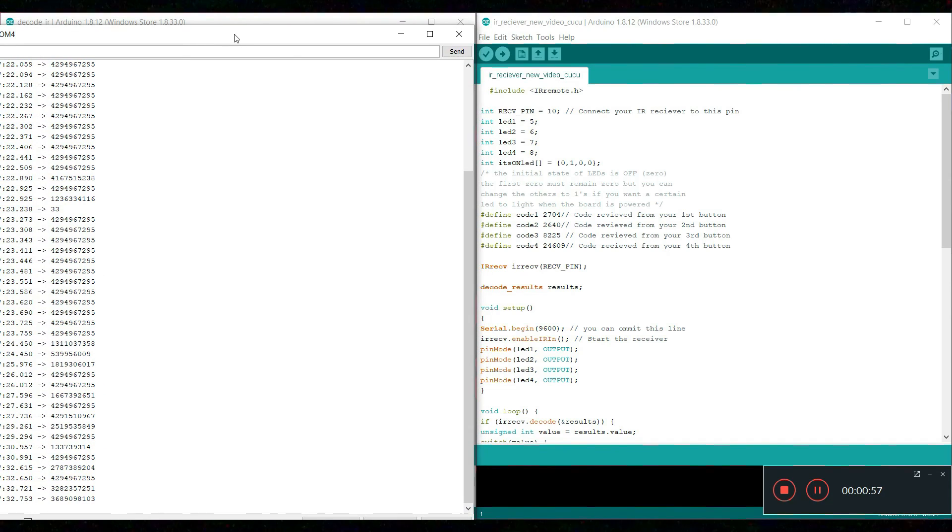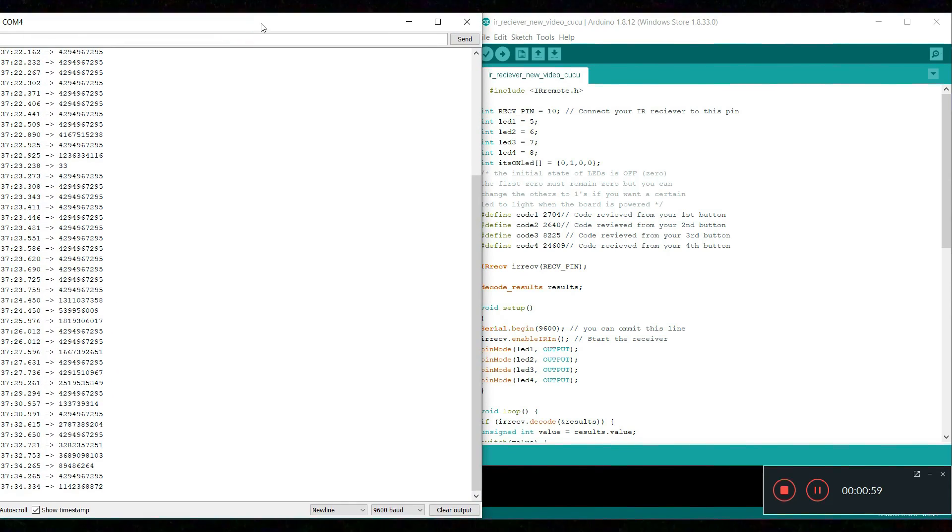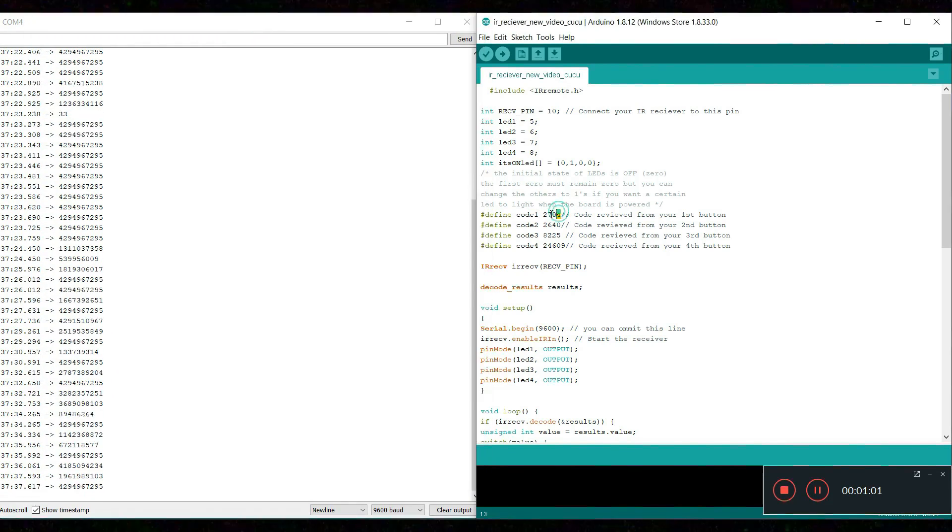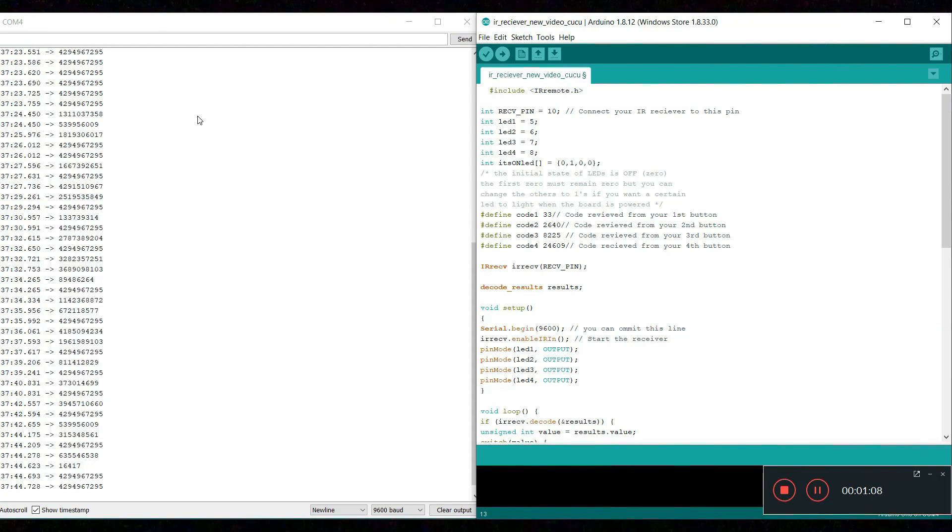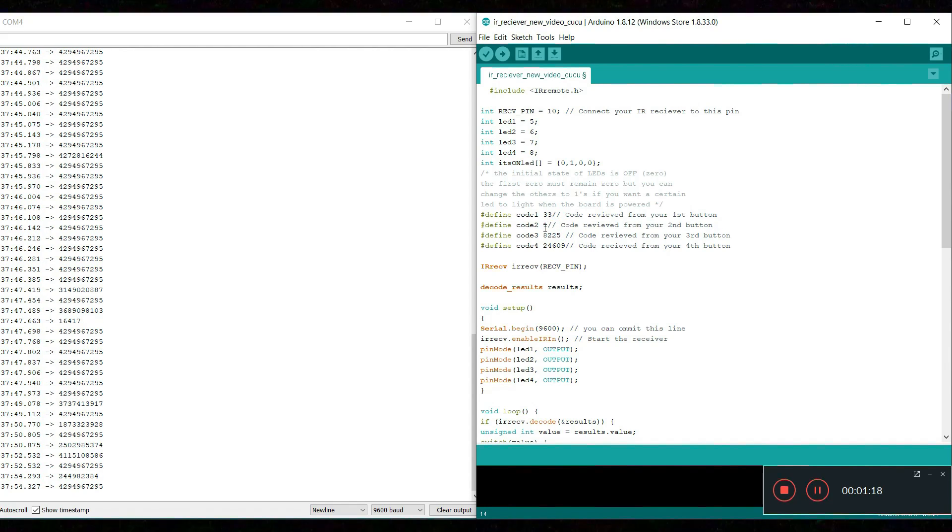Now let's put that aside. Now for code 1, let's put 33 - that will be our first LED. Now let's press our second button and what we get is 16417. And type it here.